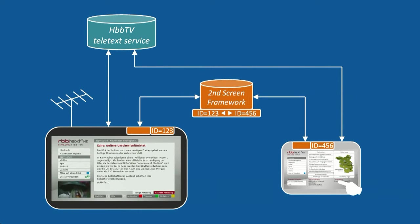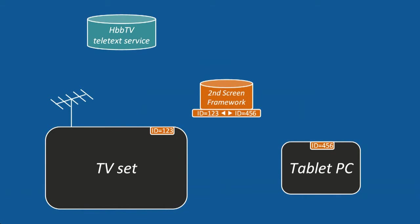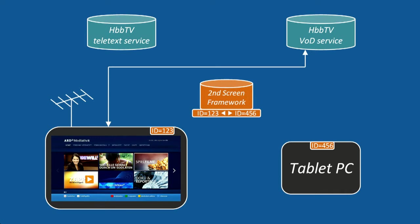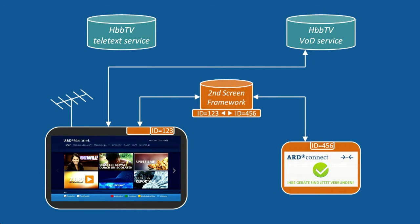When both devices are switched off later, only the cookies with the device IDs remain, plus a database entry in the framework server. When tuning to a different program later and starting an HbbTV video service there, the video application can also load the component from the second screen server. In this case, no new connection is required — the user just starts the launcher application again on his tablet and immediately a communication path is established between the HbbTV application and the tablet. The video application can send the URL of its mobile version, which is then launched on the tablet.